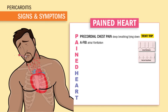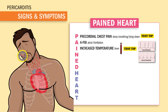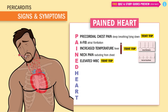I is for increased temperature, or fever. This is another test tip — usually because pericarditis is caused by a viral infection. N is for neck pain, radiating from the chest. E is for elevated white blood cells — another test tip — because a viral or bacterial infection is usually the cause of pericarditis.